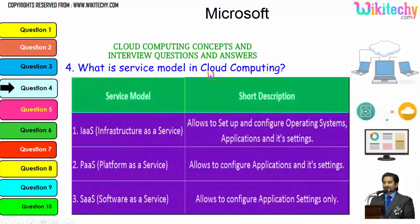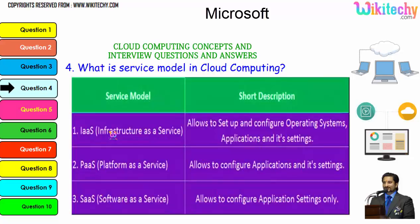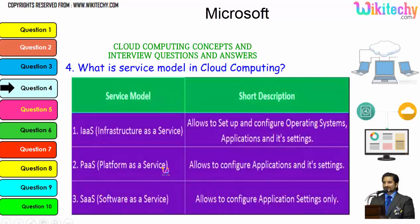The major service models in cloud computing are three. Infrastructure as a Service allows you to set up and configure the operating system, application, and its settings — you are given a server and can install whatever operating system and software you want. Platform as a Service provides a specified operating system and you can put any applications and settings on it. Software as a Service gives you a software where you can configure application settings.